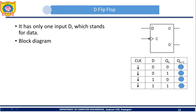Now let's see the block diagram of the D flip-flop. In this block diagram you can see that there is one input labeled as D, and there are two outputs Q and Q', which are complements of each other. Let's assume that we have a D flip-flop with negative edge triggering — this symbol represents negative edge triggering.